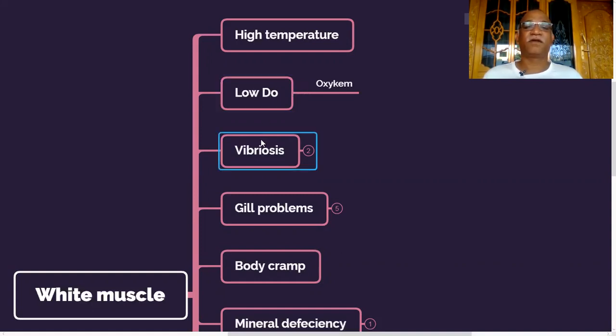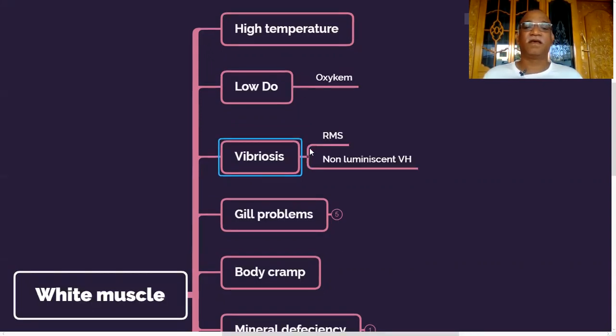The third reason for white muscle is vibriosis, especially in case of RMS, running mortality syndrome. You will find some percentage of the shrimps with white muscle. Recently, another publication came about non-luminescent Vibrio harveyi. Normally, Vibrio harveyi is a luminescent bacteria, but this particular strain is non-luminescent and it causes severe white muscle and mortality in Penaeus vannamei shrimp.